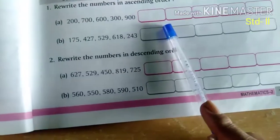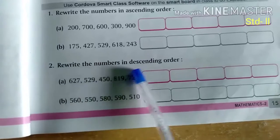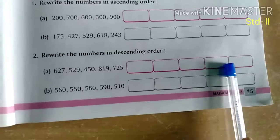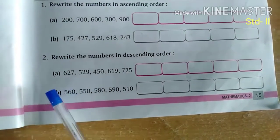So this is ascending order. And now you are going to write descending order. Descending means from bigger to smaller. Now see these are the numbers. What are they?